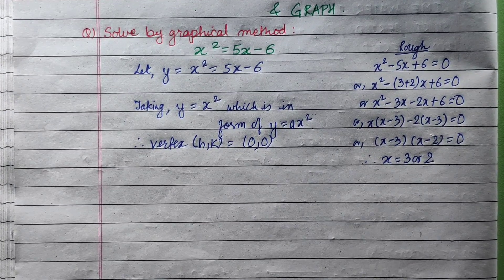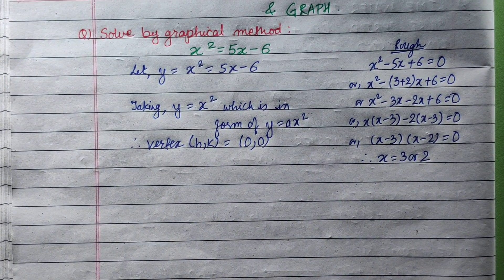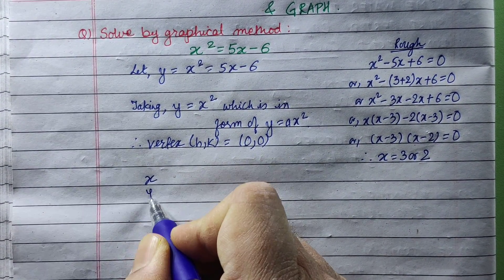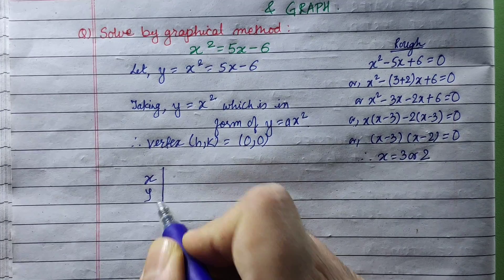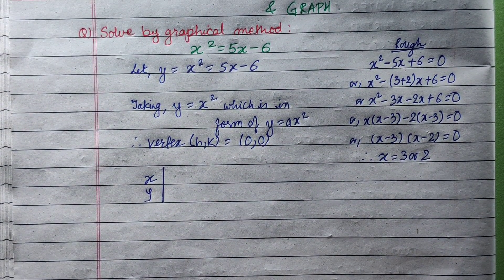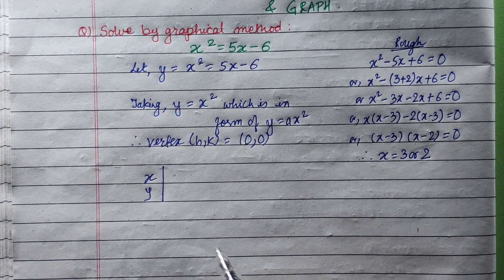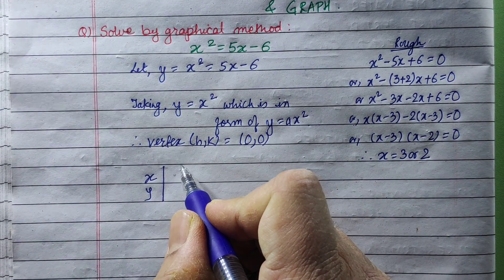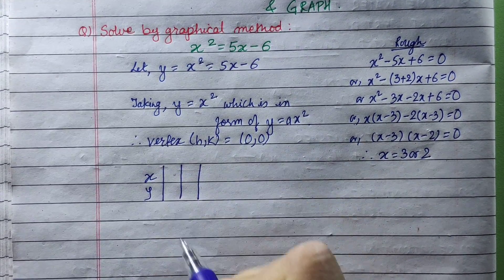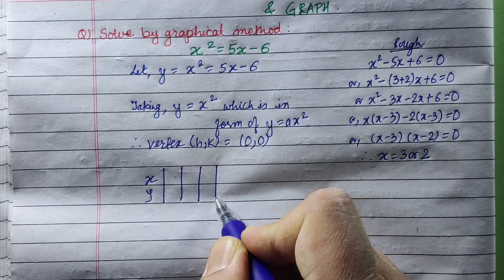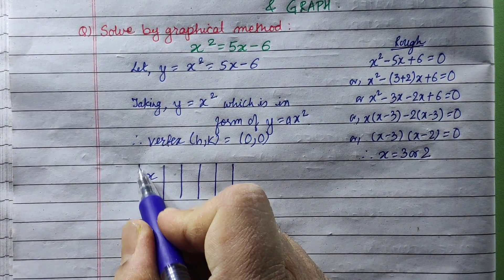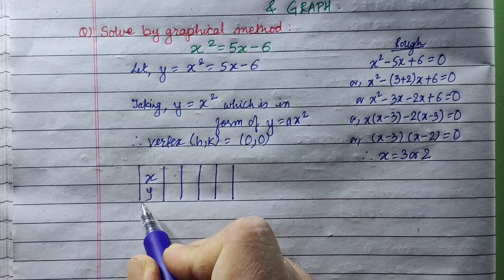Now we will create a table of values. We will create values for x squared. We will create the data and this will give us the graph. The vertex is equal to x squared — we create a box for this.